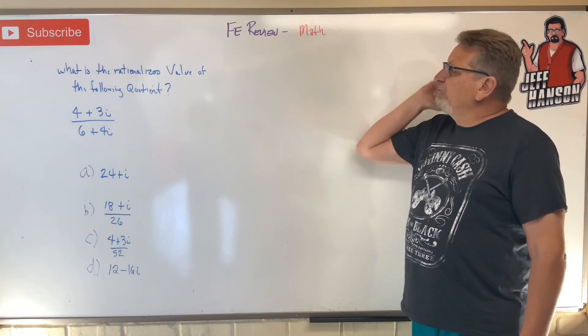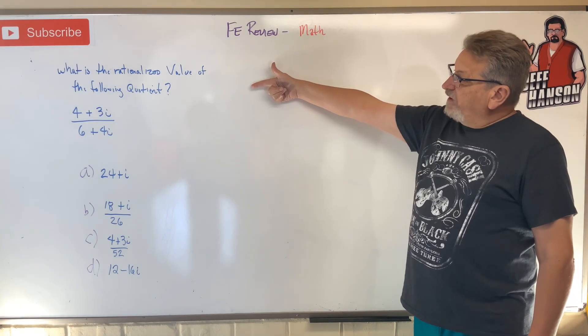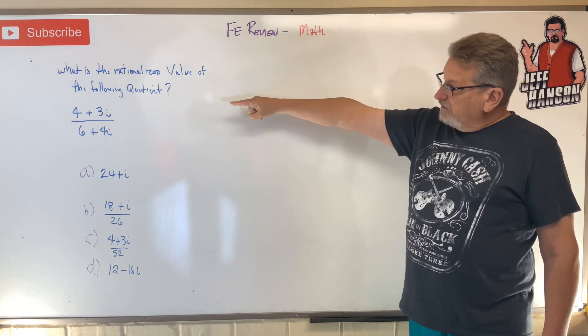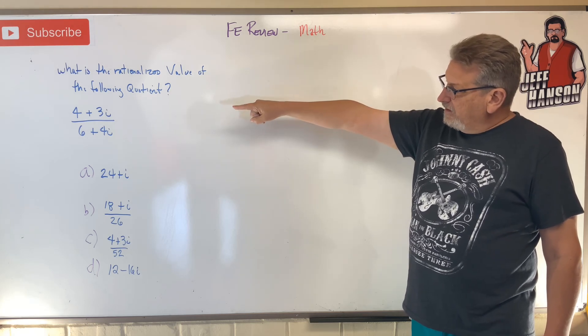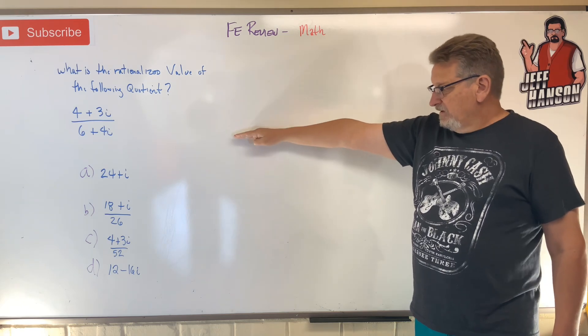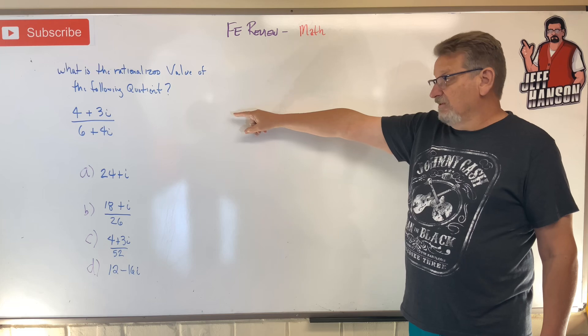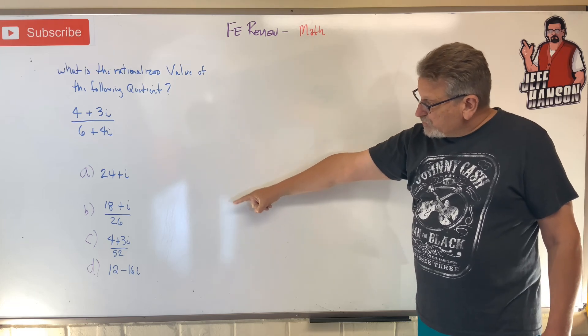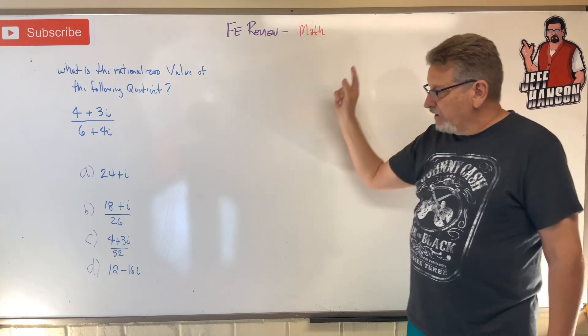Hey friends, welcome back. FE review problem math. What is the rationalized value of the following quotient: 4 plus 3i divided by 6 plus 4i? So complex numbers again. Basically, I'm asking you how do you reduce that? Which one of those is correct?